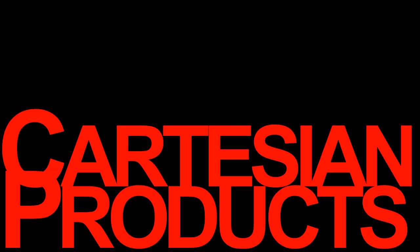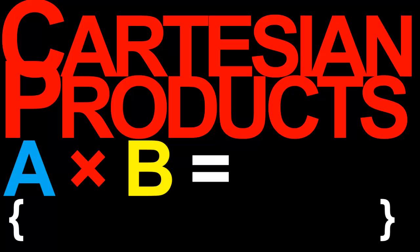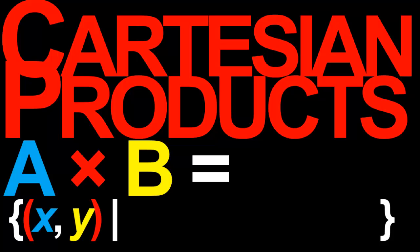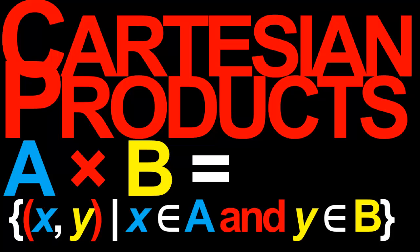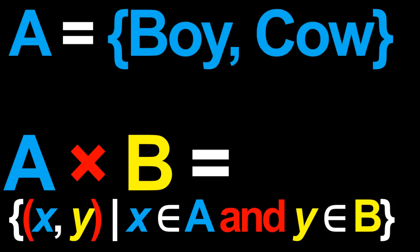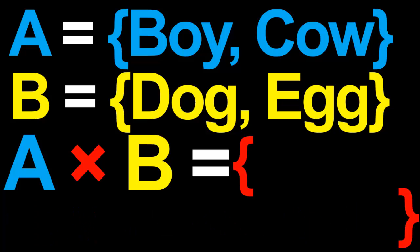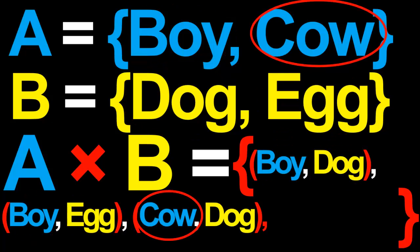Let's now switch gears and talk about Cartesian products. Given any two sets A and B, the Cartesian product of A and B, denoted A times B, is the set consisting of all the ordered pairs (x, y) such that the first coordinate x is in A, and the second coordinate y is in B. For example, if the set A consists of boy and cow, and the set B consists of dog and egg, then the Cartesian product of A and B is the set consisting of four ordered pairs: boy-dog, boy-egg, cow-dog, and cow-egg.